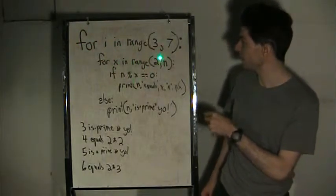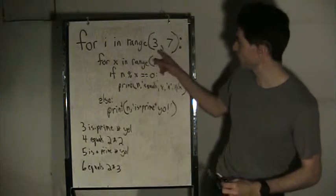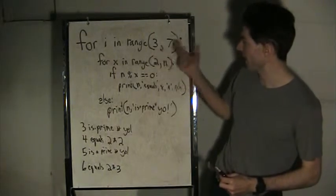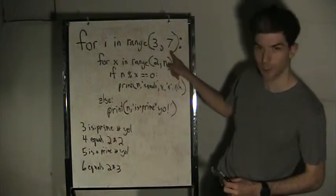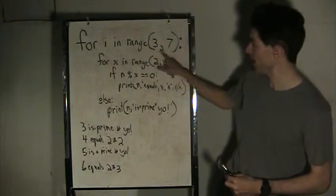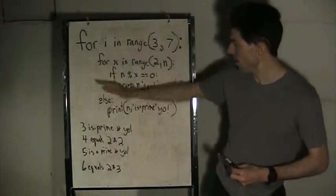This starts off as 'for i in range(3,7)'. Remember this refers to just the integers 3, 4, 5, and 6 because it's exclusive to the b value. Then it goes into this nested for loop: 'for x in range(2,n)'.